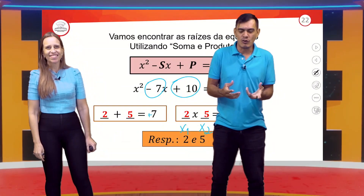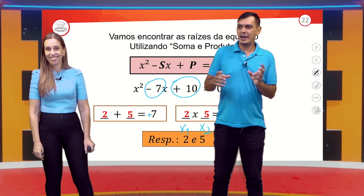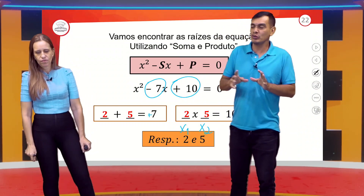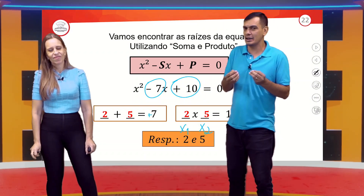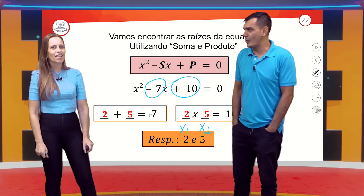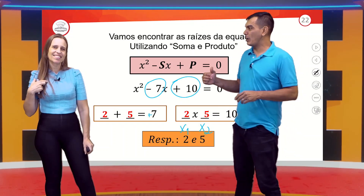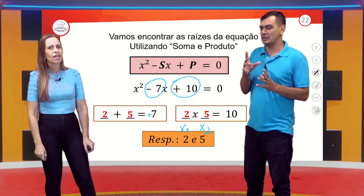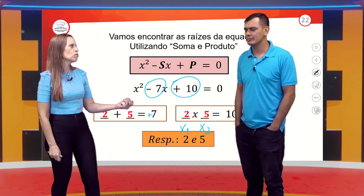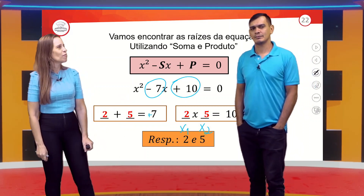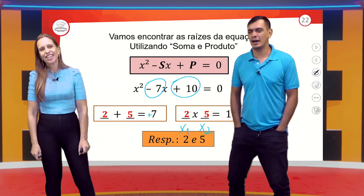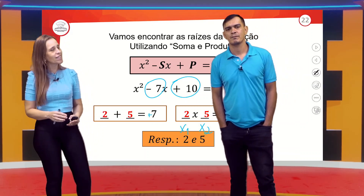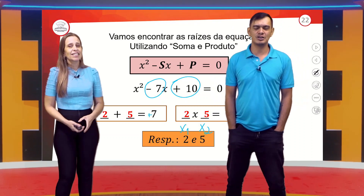Sem calcular delta nem Bhaskara? Bem, fizemos a soma e o produto — já é um cálculo. Envolve uma habilidade de olhar e perceber. É sempre melhor começar pelo produto, porque a multiplicação limita mais as possibilidades e fica mais fácil. Para dar 7 somando tem muita opção: 1 com 6, 2 com 5, 3 com 4. Mas pelo produto de 10, as opções são mais limitadas.